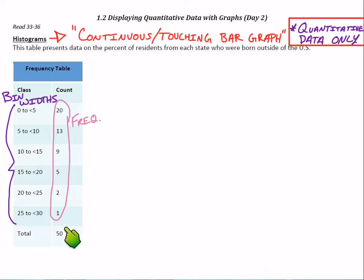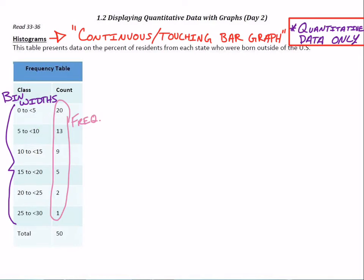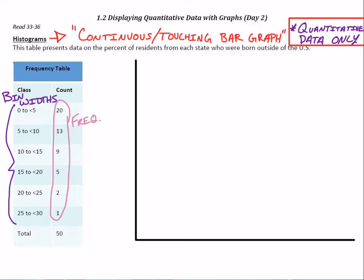There are 20 just in the first bin alone — only 0 to 5 percent of the residents are from outside the U.S. So let's put this data set into a histogram. Let's start with a couple of axes, and for the x-axis it looks like we should scale that up to 30 and count by 5s.